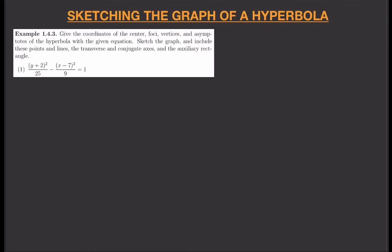The first thing when sketching the graph of a hyperbola is to find the center — the location of our hyperbola. The center is simply h comma k. Here, h comma k is 7 and negative 2, so our center is at (7, -2).